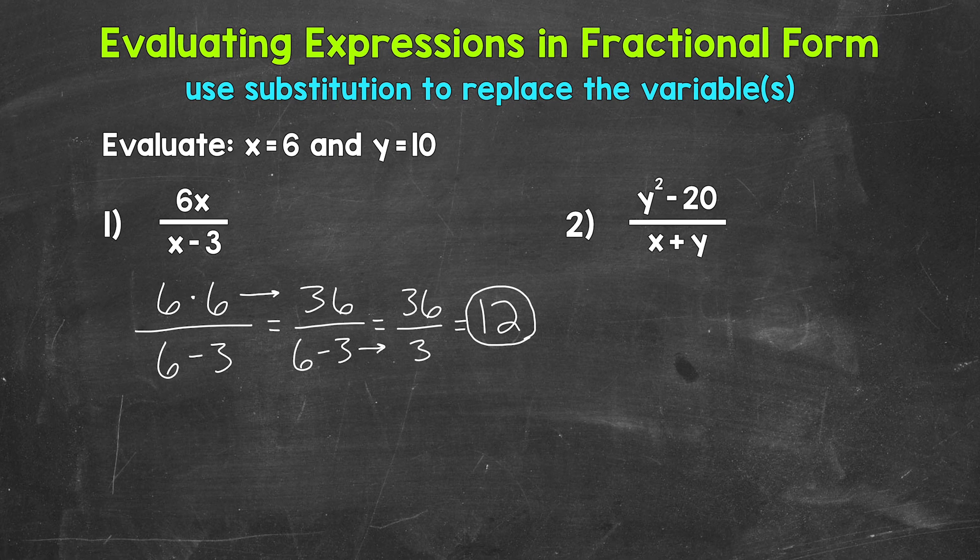To recap, we worked through the top, then we worked through the bottom, and we ended by dividing. Let's move on to number 2, where we have y squared minus 20 over x plus y.